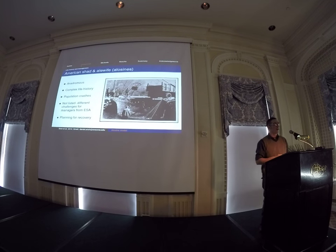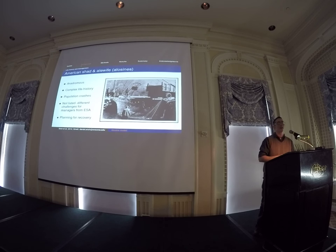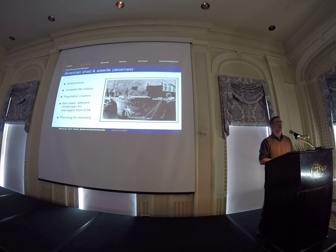American Shad are an anadromous fish in the rivers I'll be talking about today. They are very diverse and very long-lived compared to a lot of other populations. They have a really complex life history and, as a result, they face a number of threats at a number of different life history stages.